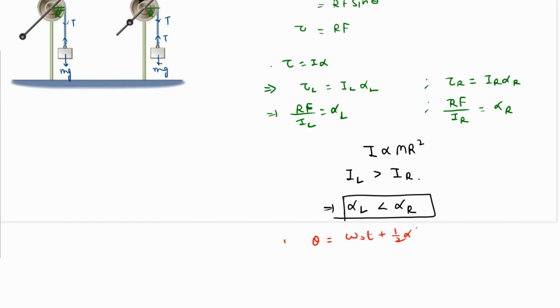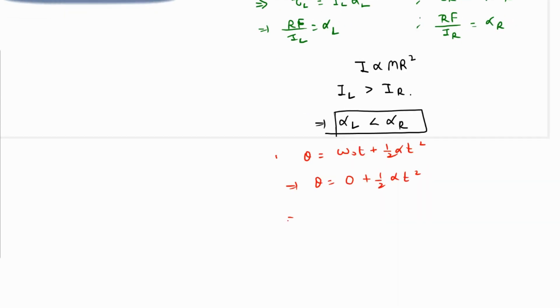Angular displacement θ equals ω₀t plus ½αt². Θ is the same for both. They are released from rest, so this is zero, and this is ½αt². If we rearrange, then 2θ over α is going to be t², which means that t is going to be the square root of 2θ over α.